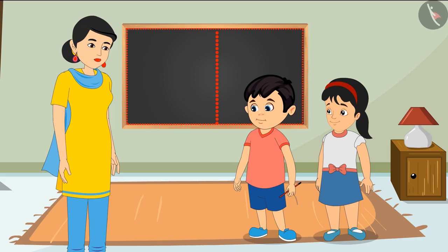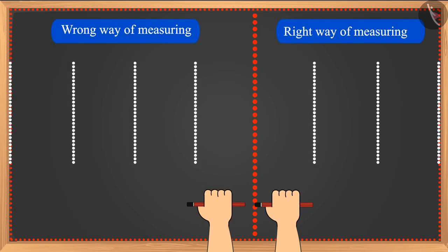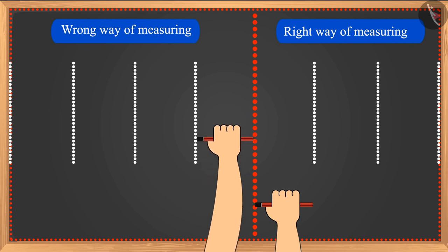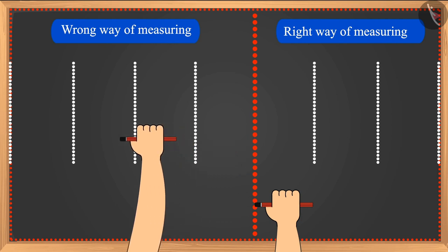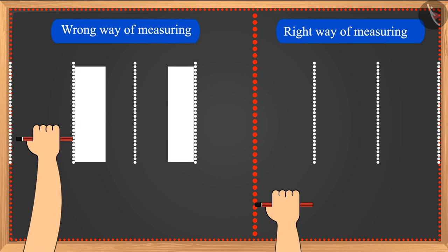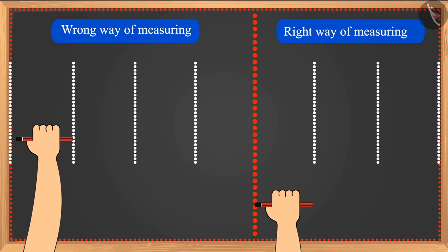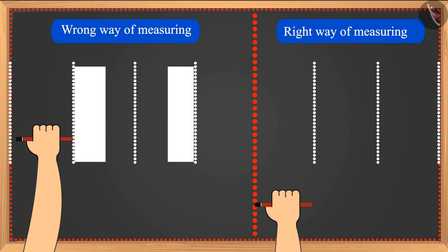So children, did you see what mistake Chotu made? He left spaces between two pencils while taking measures. That means Chotu did not measure the leftover space, so he did not measure the entire length.